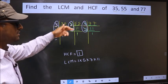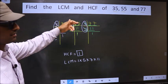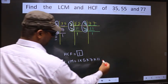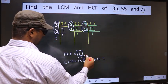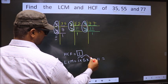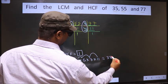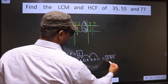So our LCM is 1 times 5, 5 times 7, 35 times 11. We get 385 as our LCM.